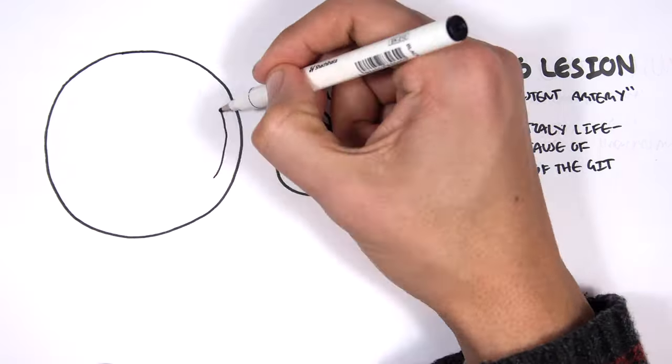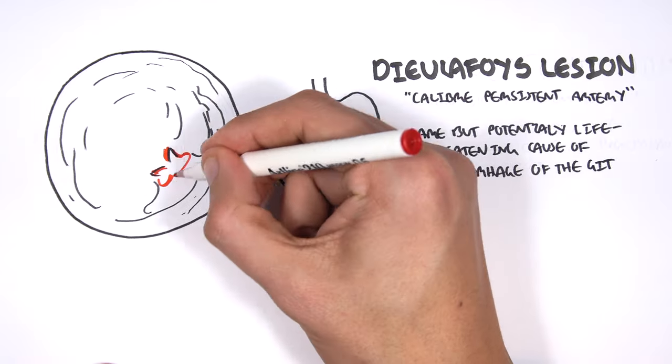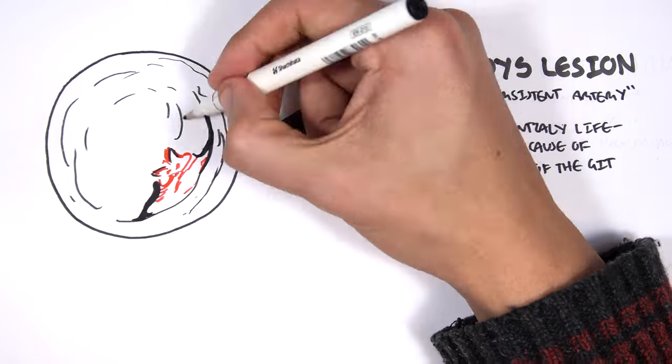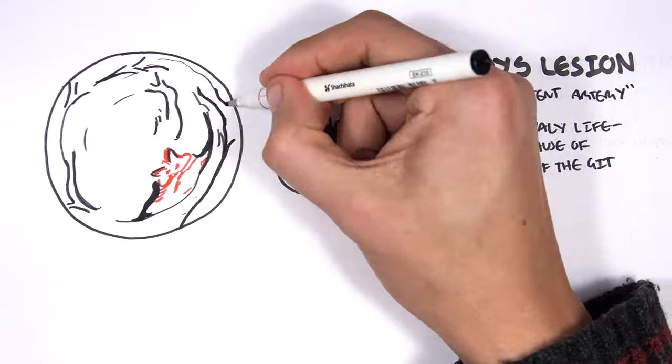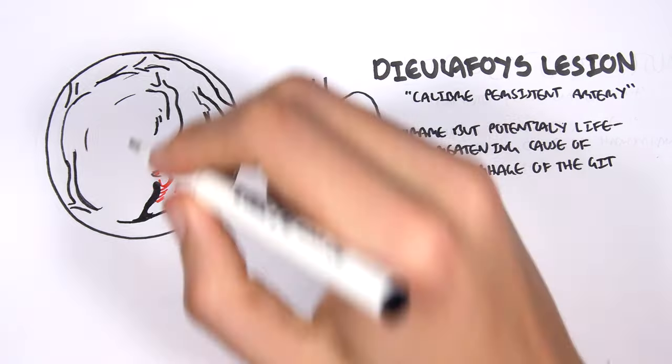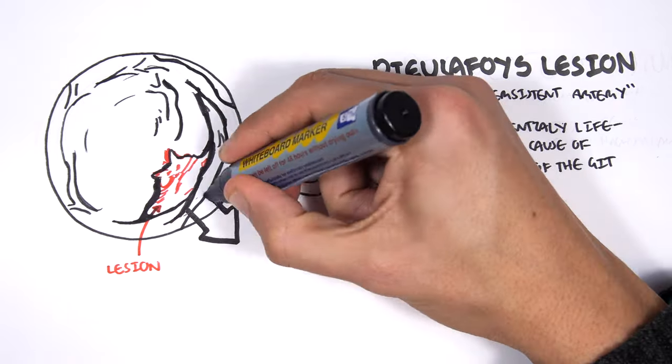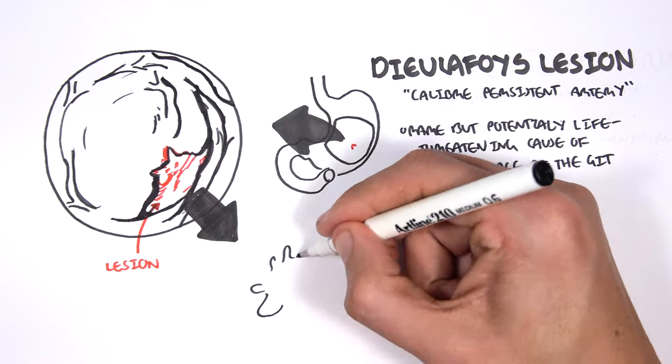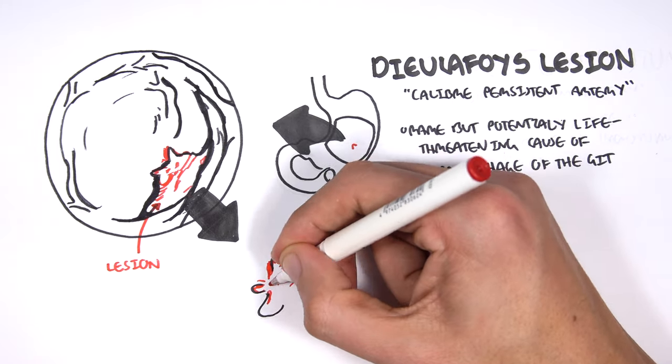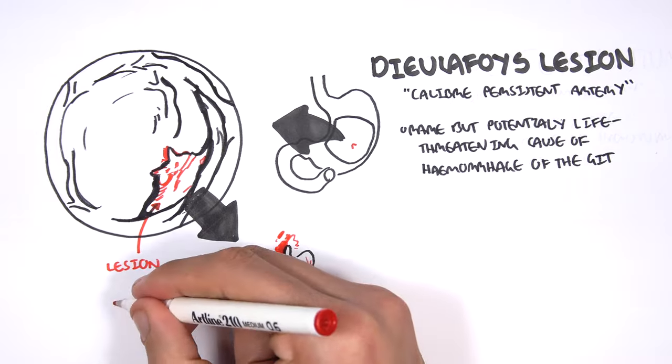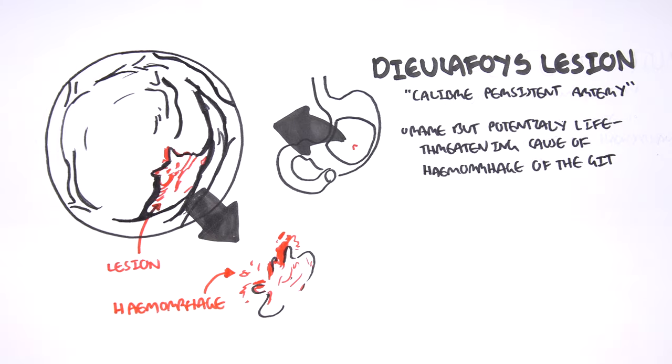If we zoom into the stomach and look at it through an endoscope, we would see that it's essentially where we have a bulging of a lesion. This lesion could subsequently rupture, causing a hemorrhage because of the blood that supplies the area. This can cause severe internal bleeding, which can be fatal.